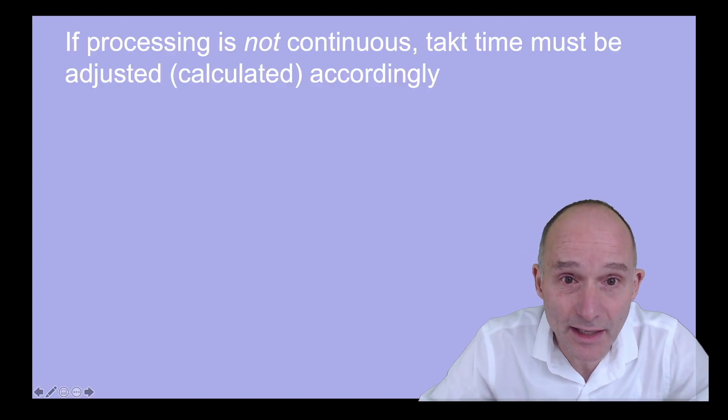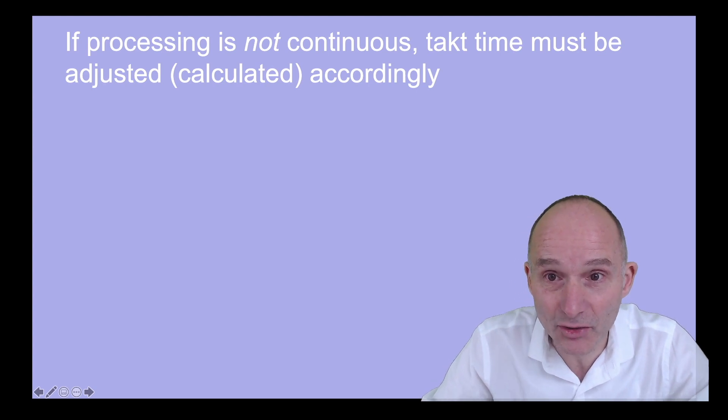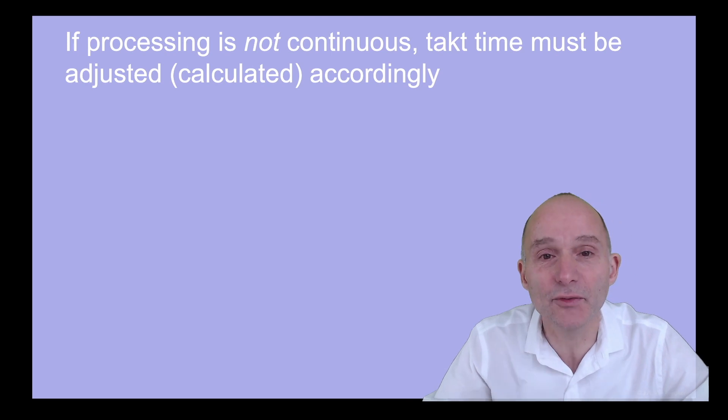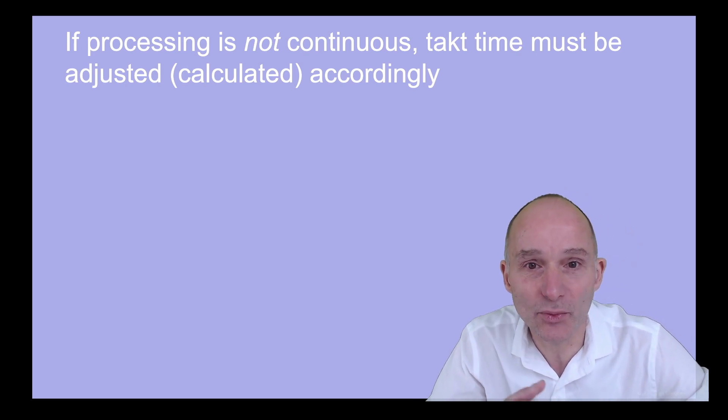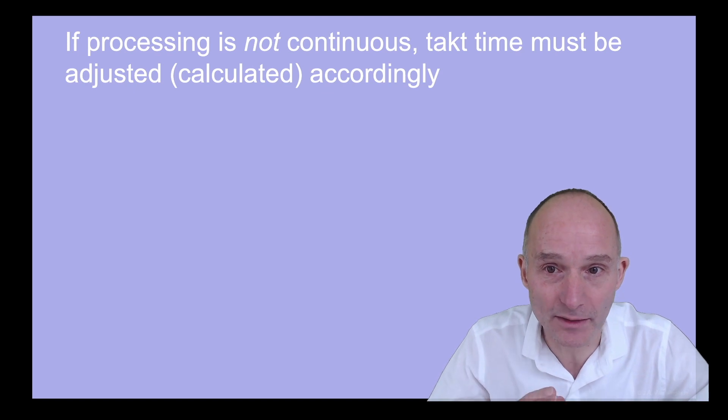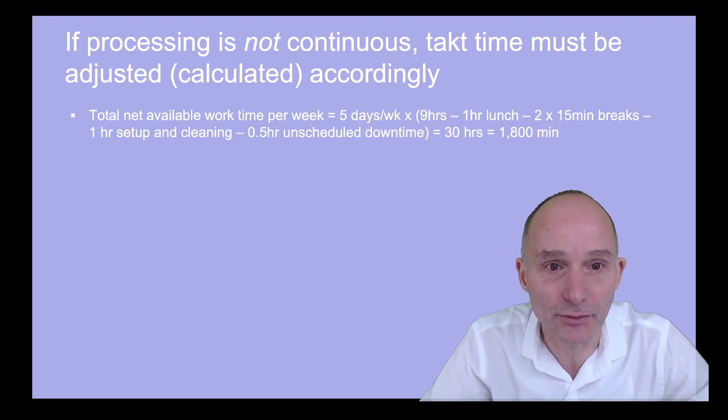Recall that our sandwich shop was a simple operation that operated continuously whenever customers are present. But what if we can inventorize our product and work a standard single shift, say of 5 days per week? For production to be in sync with demand, we must now adjust the takt time so that the weekly supply equals the weekly demand. Here's a simple example of how to do that.